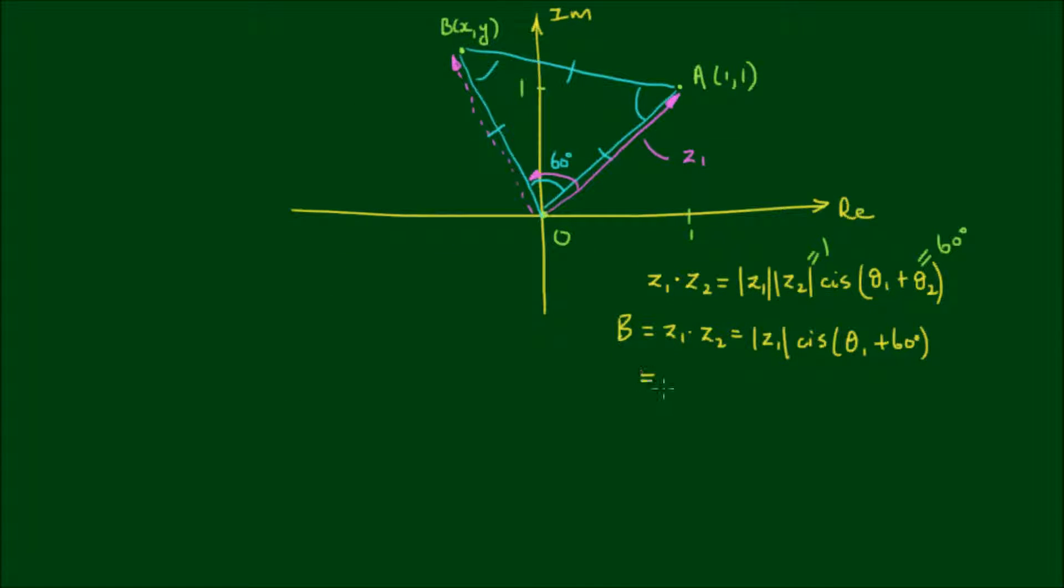And now this may be a little bit unconventional, but I'm going to say that this is equal to 1 plus i, which is what Z1 is, and then multiplied by cis of 60 degrees. So this is a combined Cartesian form and polar form multiplication.